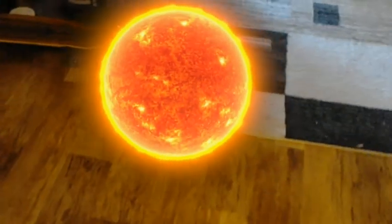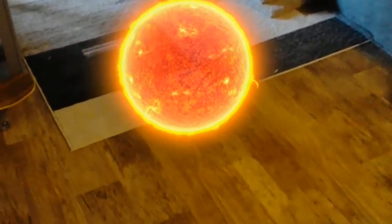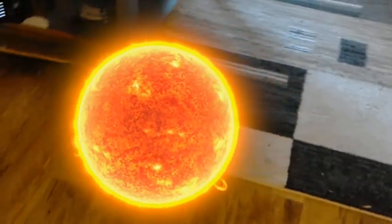At about 4.6 billion years old, the sun is an enormous ball of hot plasma more than 100 times the size of Earth.